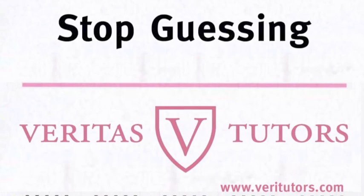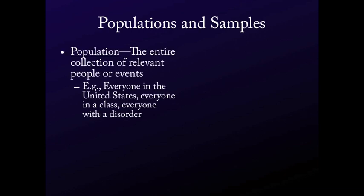The very first thing we need to talk about, which really starts off all statistics, is the difference between populations and samples. A population is just an entire collection of relevant people or events. You can define a population however you want — it includes every single example of it. For instance, everyone in the United States, everyone in this class, or everyone with some specific disorder. What matters is what types of questions you want to ask or what your theory says.